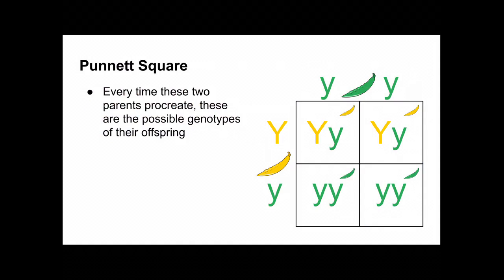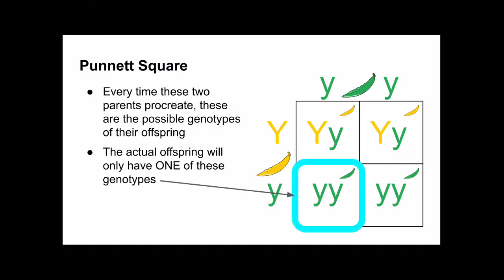So every time these two parents procreate, these are the possible genotypes of their offspring. That's what the Punnett square tells us. Now it's important to note that the actual offspring will only have one of these genotypes, maybe this one. The four that you see in the middle of the Punnett square, those are possibilities, and then the actual offspring will have one of those four possibilities.